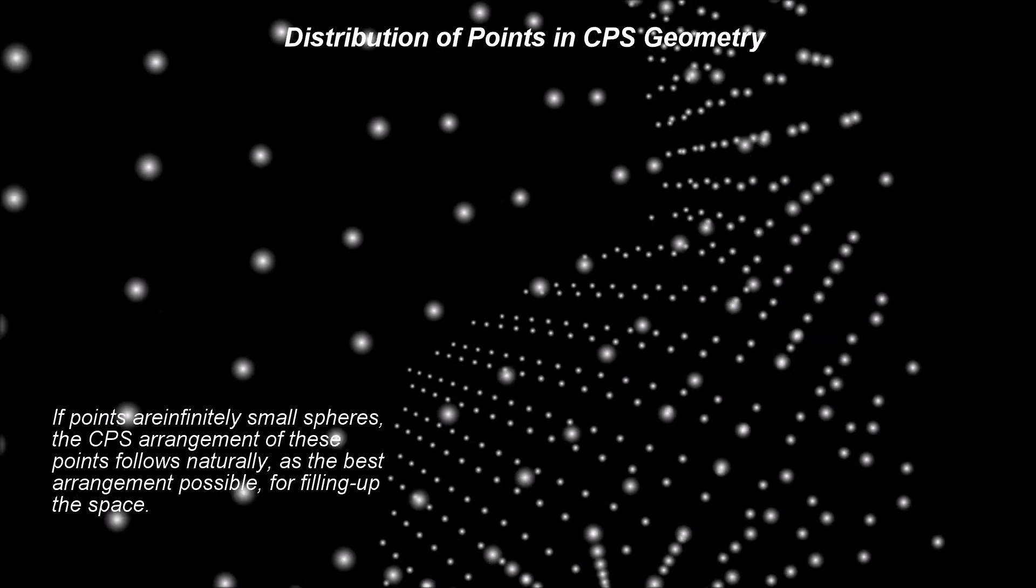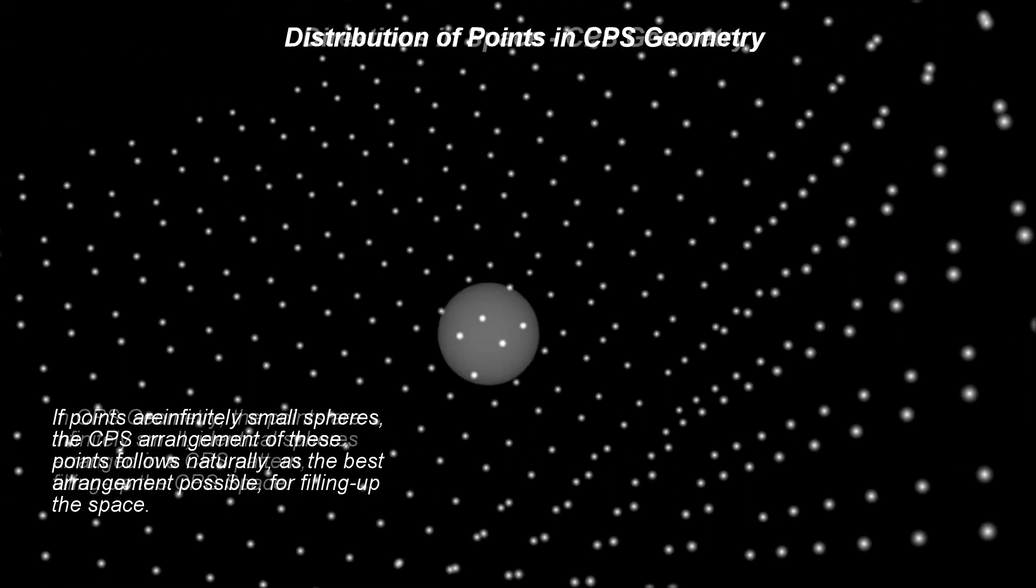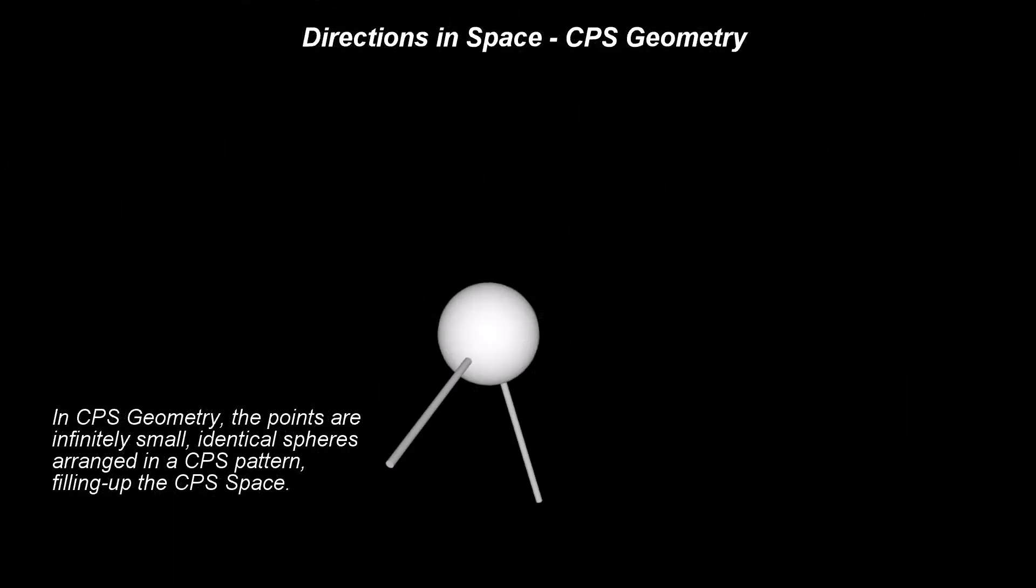The angles and directions observed, when considering regular spheres, will not change when these spheres become infinitely small. Keep in mind, the measurement of an angle always involves a ratio.